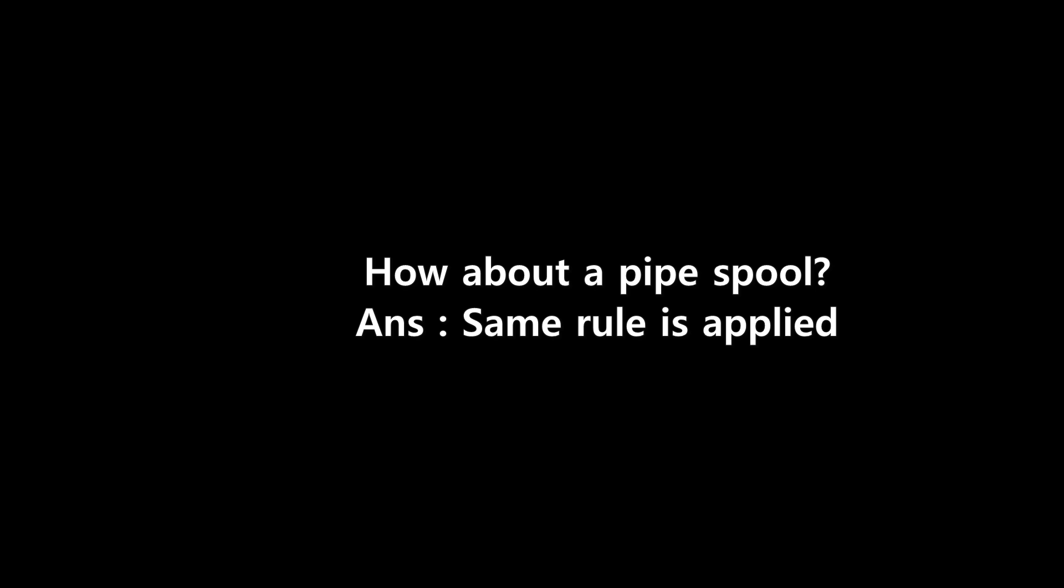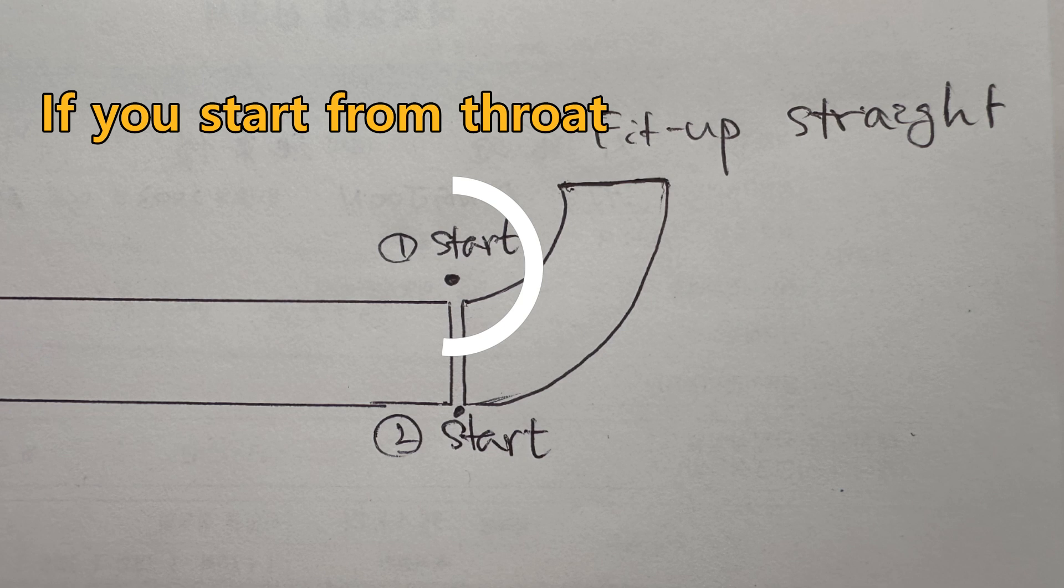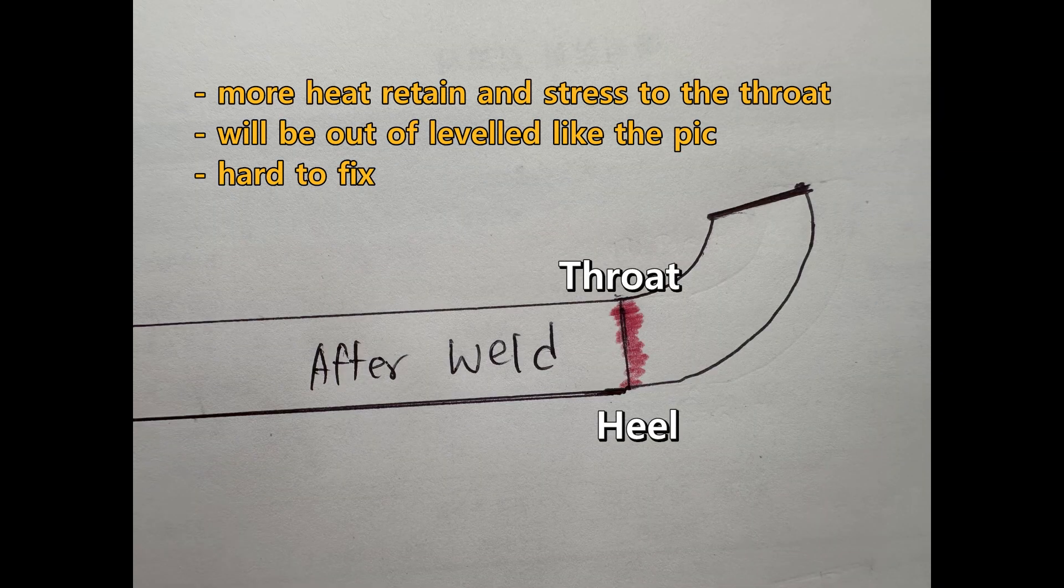Let's study what happens when you weld a pipe spool. I have to weld a pipe and a 90-degree elbow joint. Where do I have to start? If you start from the elbow throat side, it will get more heat retained and stress.